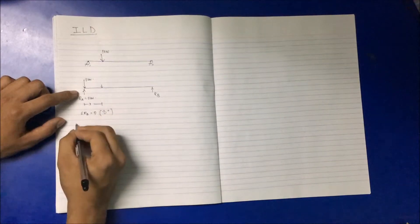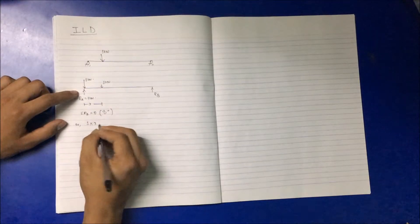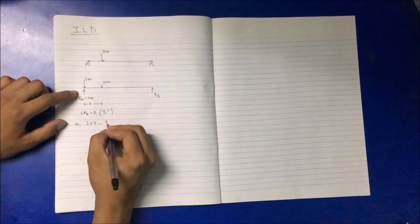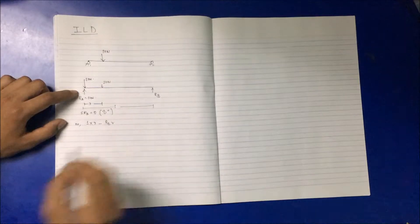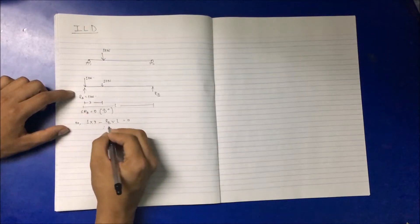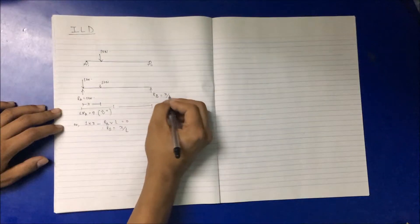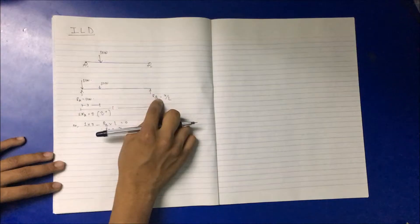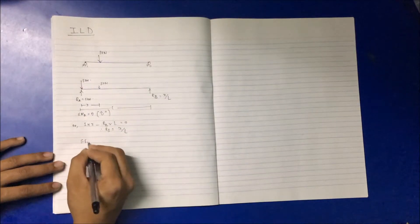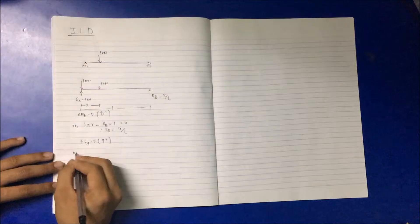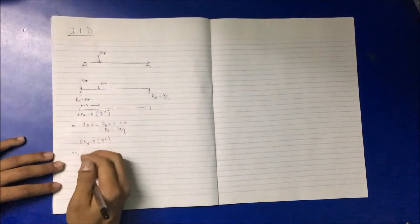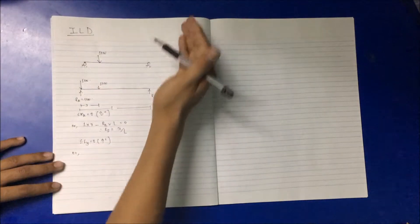Taking anticlockwise as positive: 1 kilonewton at distance X, so 1 multiplied by X minus RB multiplied by L equals zero. If the total span is L, we get RB equal to X by L. For RA, applying ΣFy = 0 with upward positive: RA plus RB minus 1 equals zero, giving RA equal to (L minus X) by L.